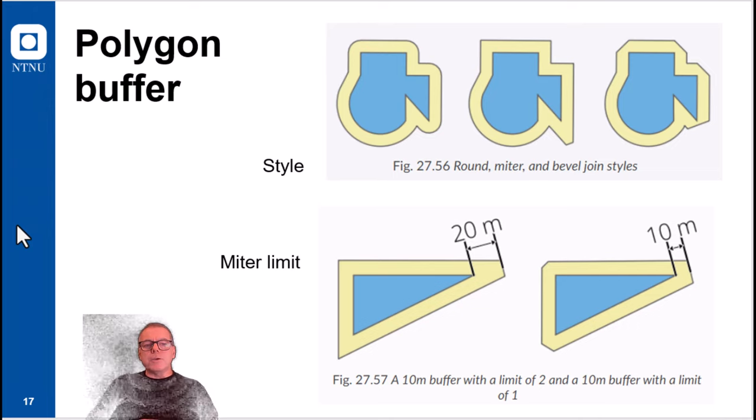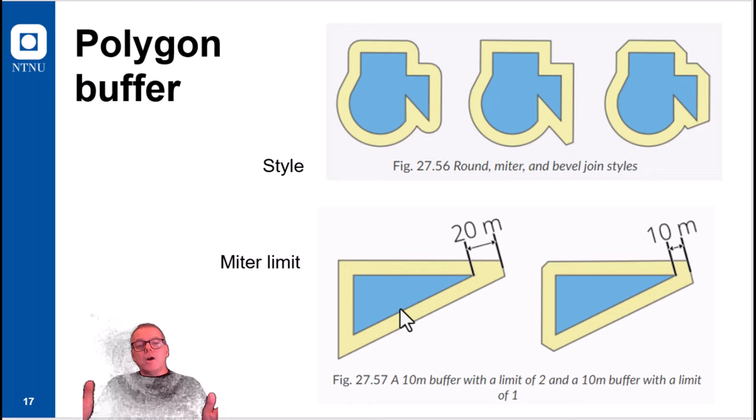Now for polygon buffer, just as you have for linear features, you can set a parameter on what kind of style you want. The default is the rounded version, but you can have also what is called miter and bevel. And for the miter, you can set a parameter on how far out the buffered polygon would reach.